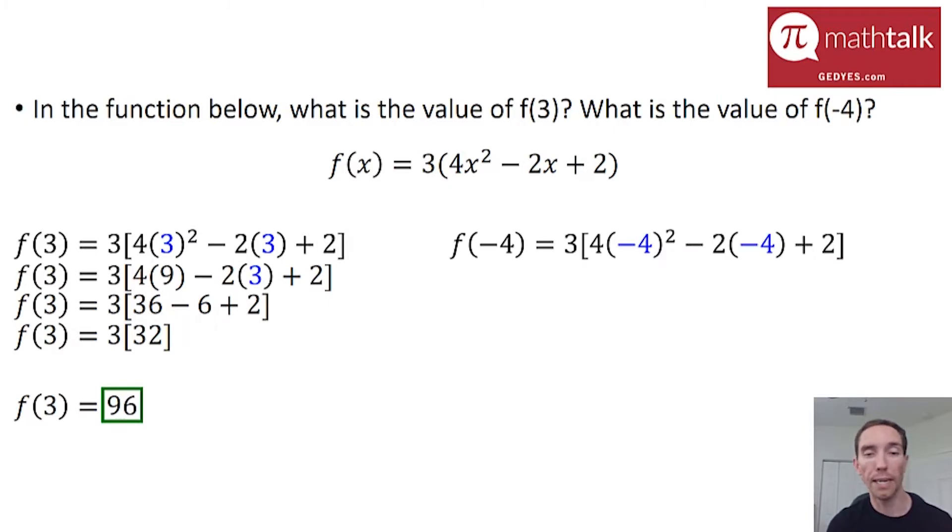So I'm going to plug in negative 4 anywhere there's an x, and I'm going to go ahead and use order of operations to simplify it down. So within the parentheses or the brackets, I'm going to use exponents. So negative 4 squared is negative 4 times negative 4, which is positive 16.